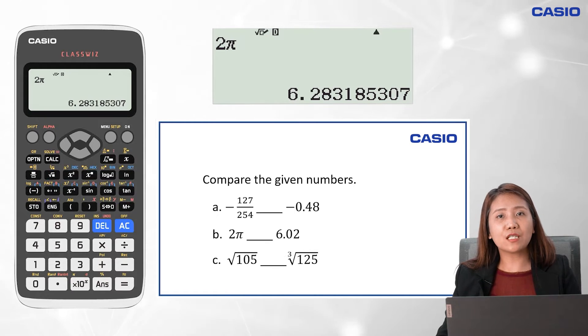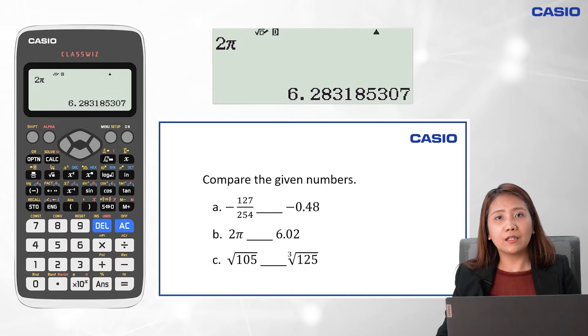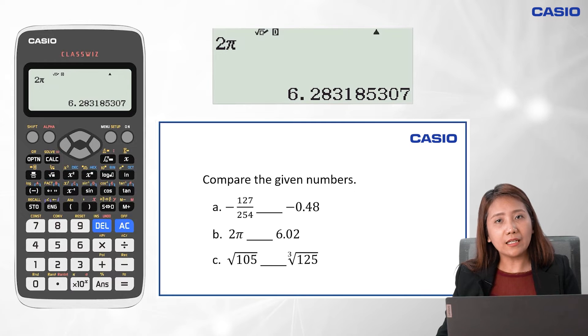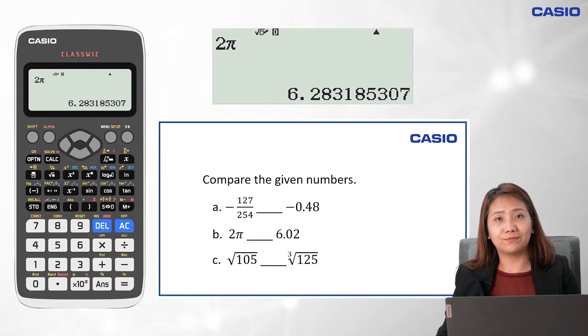We have 6.2831, which is greater than 6.02. Thus, 2π is greater than 6.02.